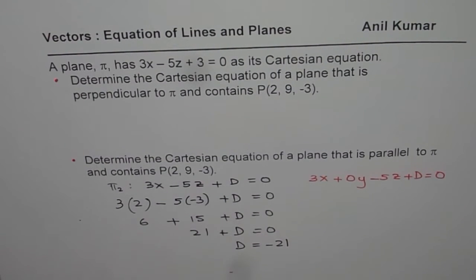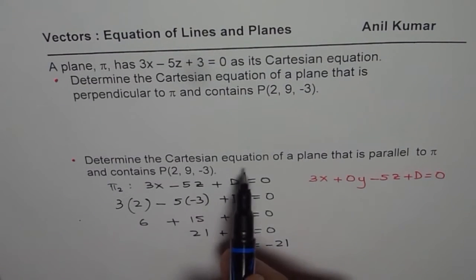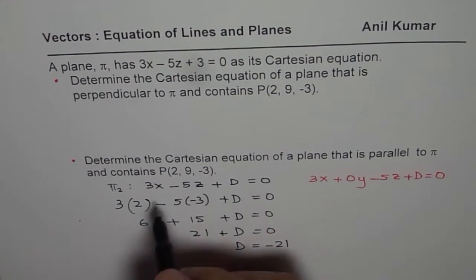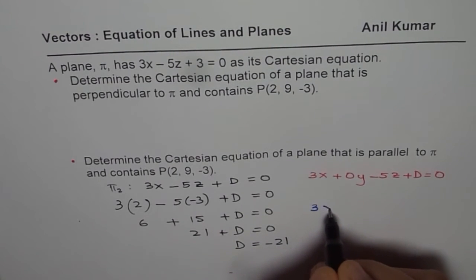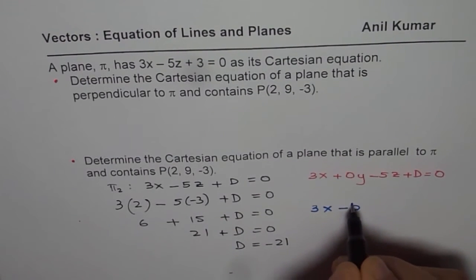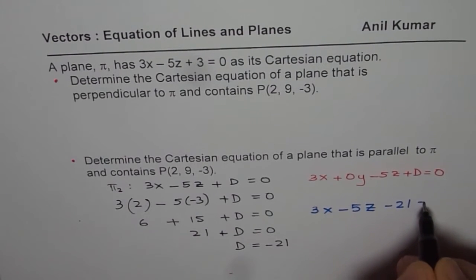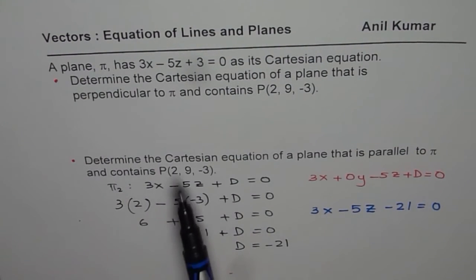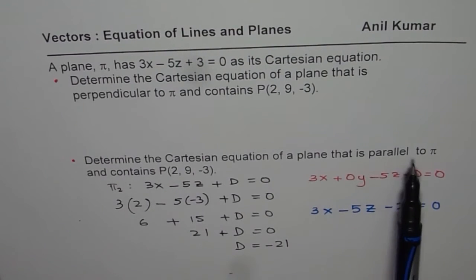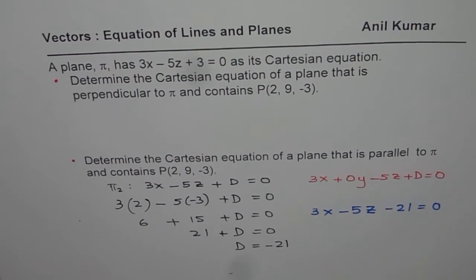Now that, once we know, we can write down the equation. And so the Cartesian equation of the plane will be 3x minus 5z minus 21 equals to 0. So that is how you can do part B, which is parallel to the given plane.